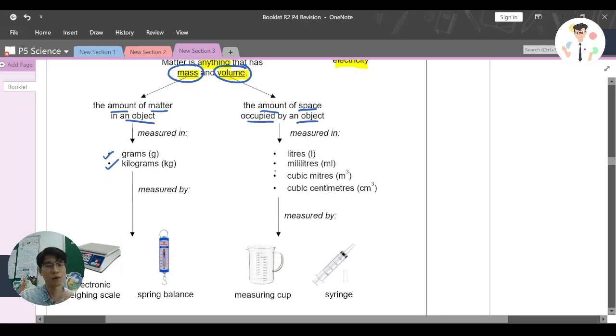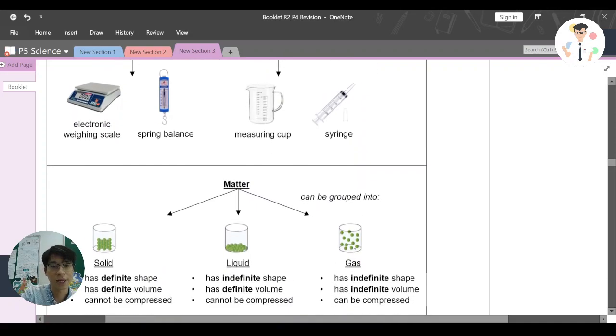And for volume, as you know, again it is the amount of space occupied by an object. It can be measured by liters, milliliters, cubic meters, and cubic centimeters. These are the things we can measure by something called the measuring cup or measuring cylinder and syringe.